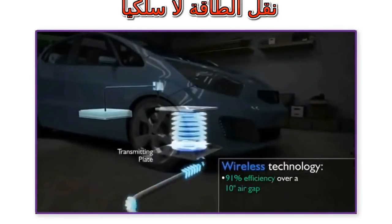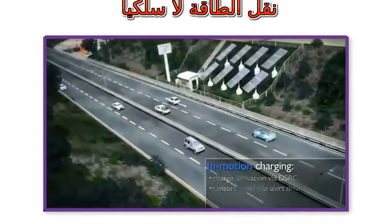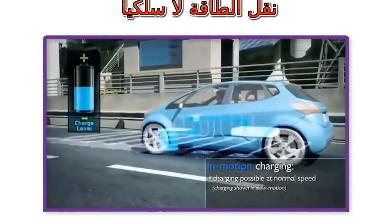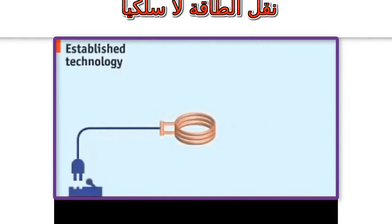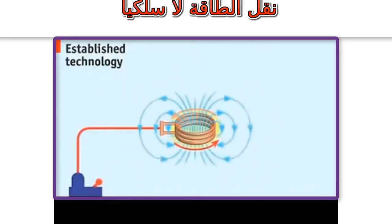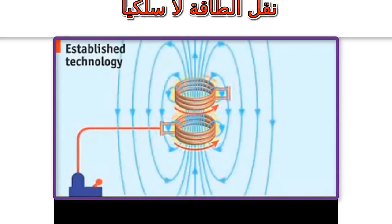The basics of wireless power involves the transmission of energy from a transmitter to a receiver via an oscillating magnetic field. To achieve this, direct current supplied by a power source is converted into high-frequency alternating current by specially designed electronics built into the transmitter. The alternating current energizes a copper wire coil in the transmitter, which generates a magnetic field.